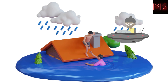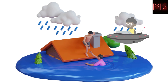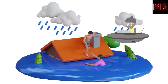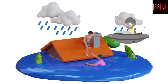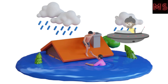What to do if flooding occurs? If flooding occurs, go to higher ground and avoid areas subject to flooding. Do not attempt to walk across flowing streams or drive through flooded roadways. If water rises in your home before you evacuate, go to the top of a roof. If you've come into contact with floodwaters, wash your hands with soap and disinfected water. Turn off all utilities at the main power switch and close the main gas valve if advised to do so.